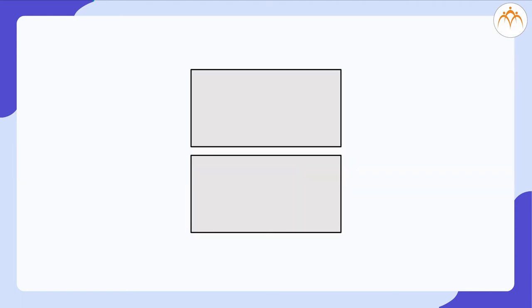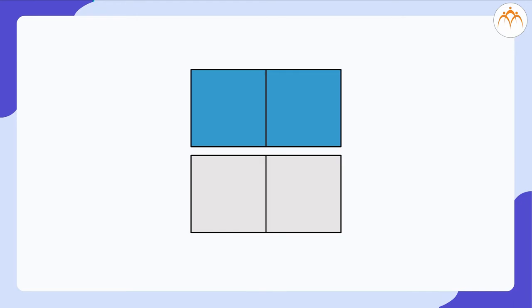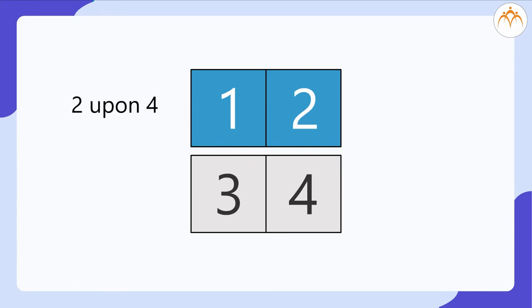You already have this rectangular piece of paper divided into two equal parts. Let's color one of its parts. The colored part can be indicated as one out of two — one upon two. If I make another fold, say vertically, now how many parts are colored and out of how many equal parts? Now two parts are colored out of a total of four parts. The colored part can be indicated as two upon four, or two divided by four.